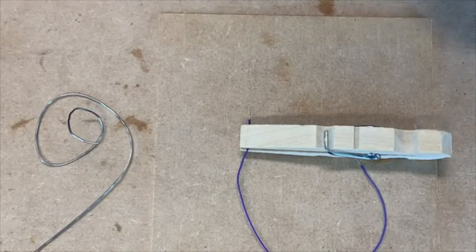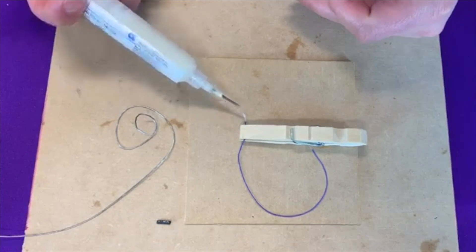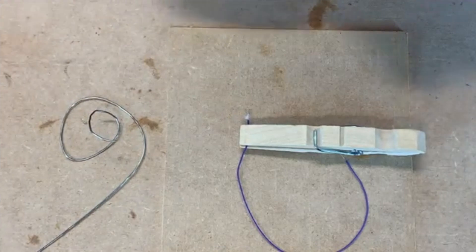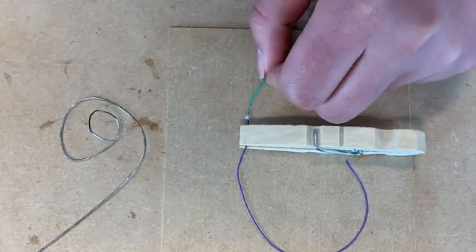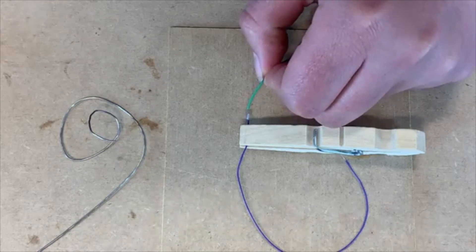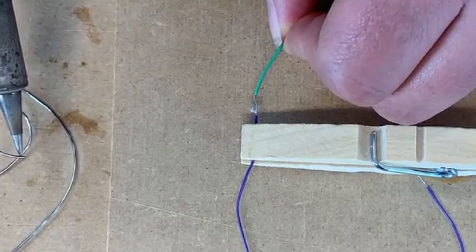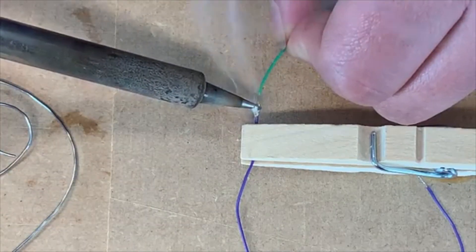And we're going to use the same process here. I'm going to put a dab of flux on the wire. And then we're going to put this wire parallel along with that wire, clean off our soldering iron, get a little bit of solder, and touch it to the joint.